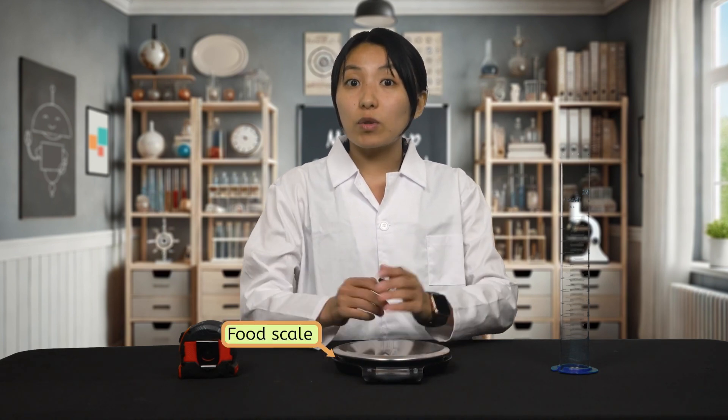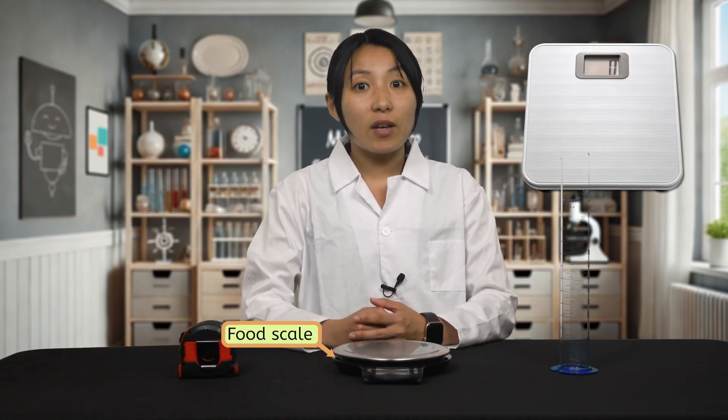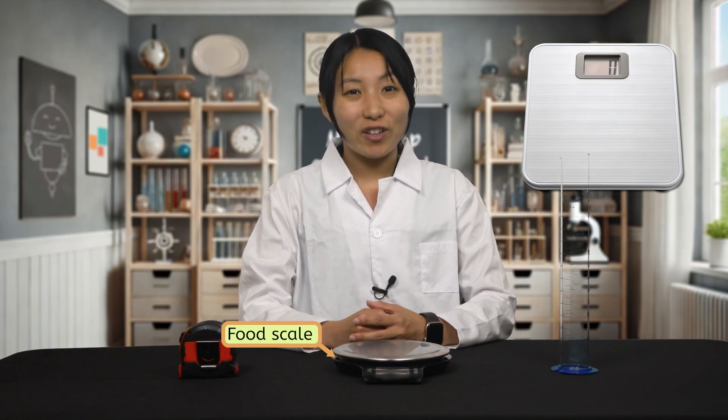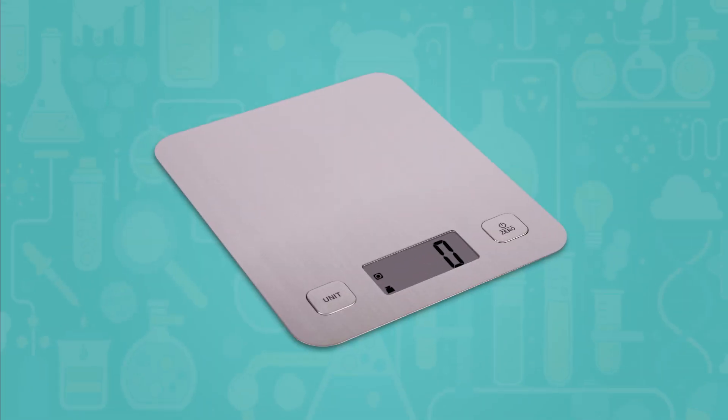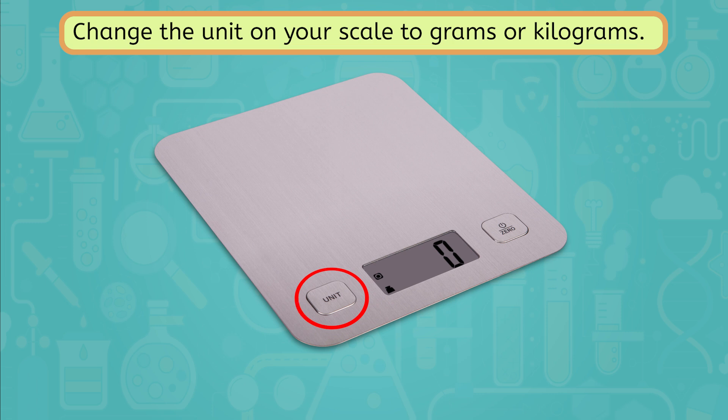To measure mass, you'll need an electronic scale. A food scale that measures in grams would be best, but a body scale that measures in kilograms will also work. Your scale may currently be set to measure in pounds or ounces, but digital scale models usually have a button somewhere that changes the units. Make sure to change the unit on your scale to grams or kilograms so that it's metric. Kitchen scales usually have a button to do this right next to the screen, and body scales usually have a button on the bottom or side.